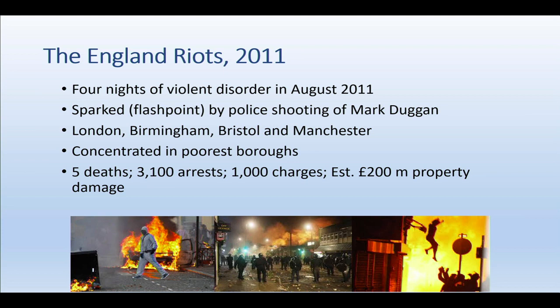The English riots happened in 2011 — four nights of huge disorder, an estimated two hundred million dollars of property damage, over three thousand arrests, about a thousand people charged, and five people died. Most of the dissent happened in the poorest neighborhoods in London, Birmingham, Bristol, and Manchester. It was sparked by the shooting of Mark Duggan — a flashpoint involving a confrontation between a disadvantaged person and the police, very similar in some ways to the Rodney King LA riots when police were found not guilty of bashing Rodney King back in the early 90s.